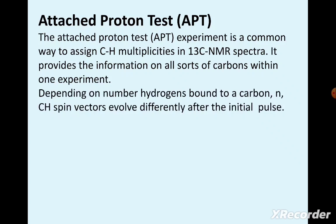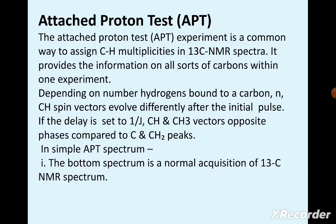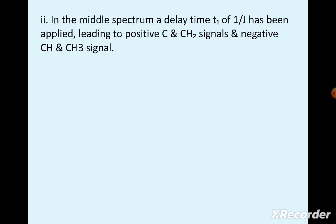Spin vectors evolve differently after the initial pulse according to the number of hydrogens attached. At a delay of 1/J_CH, the CH and CH3 vectors are in opposite phases compared to C and CH2 peaks in a simple APT spectrum.